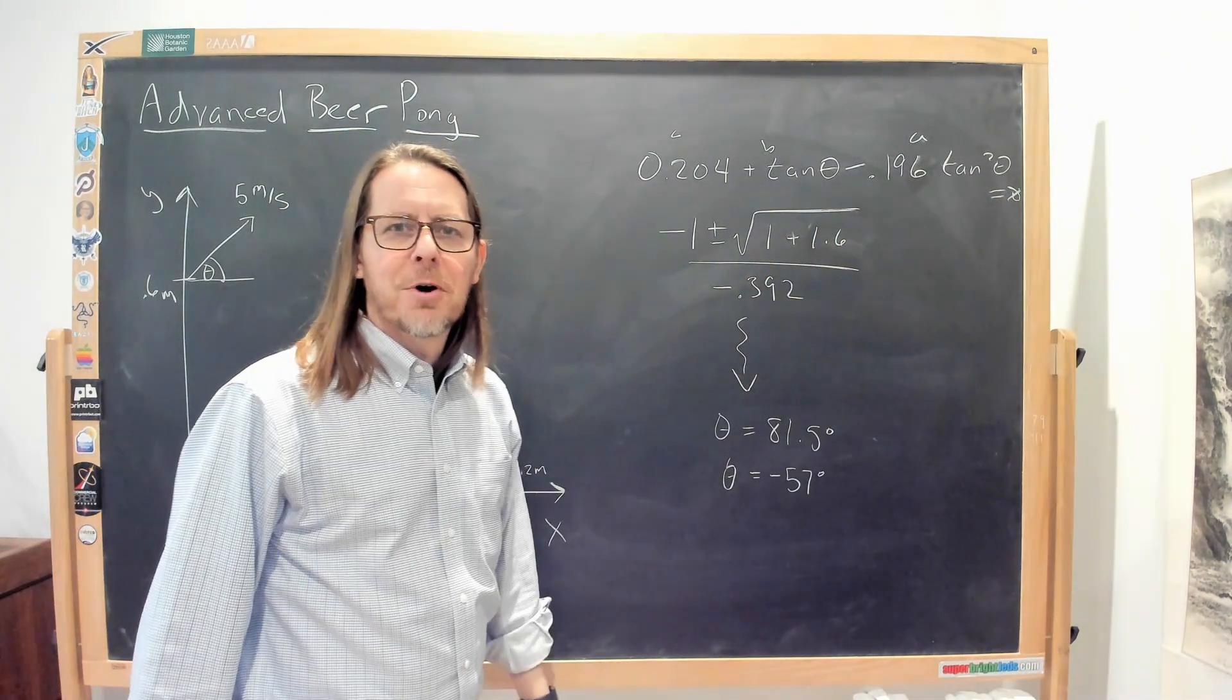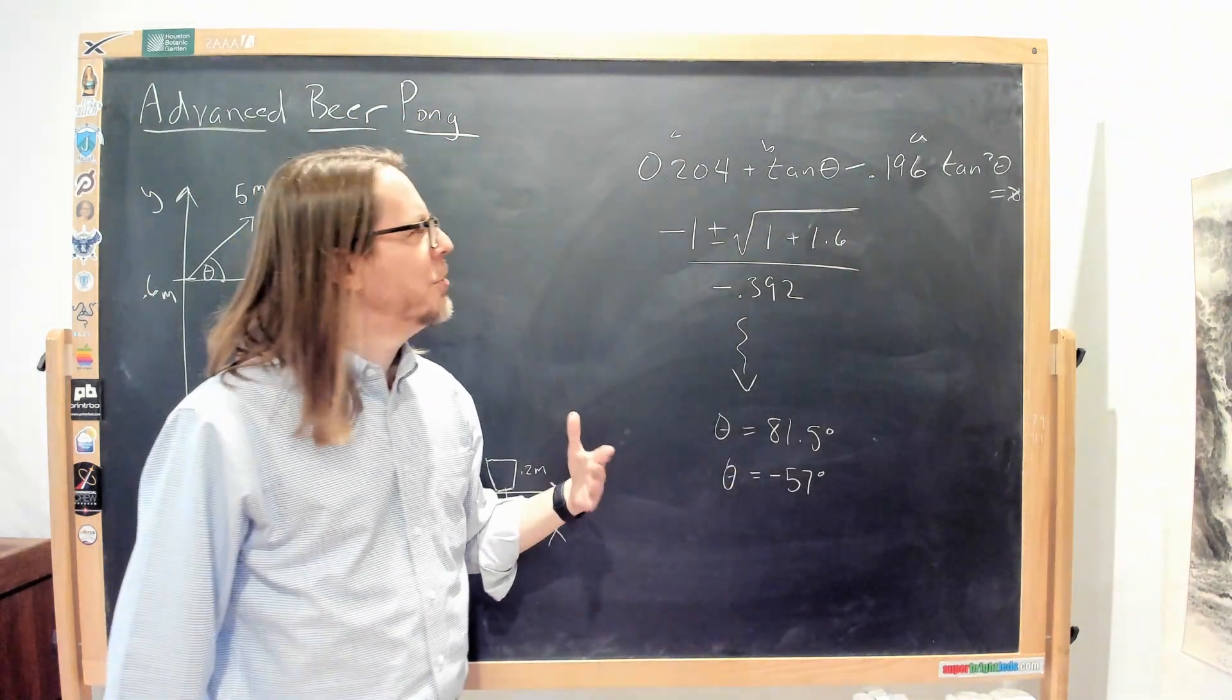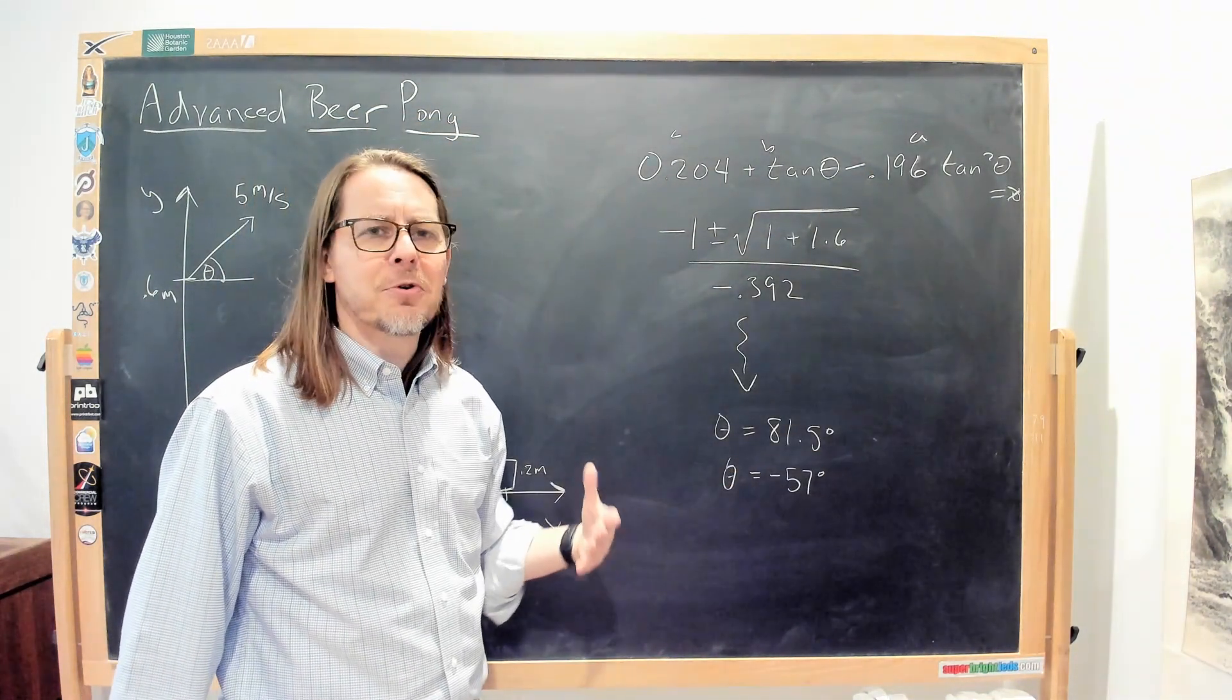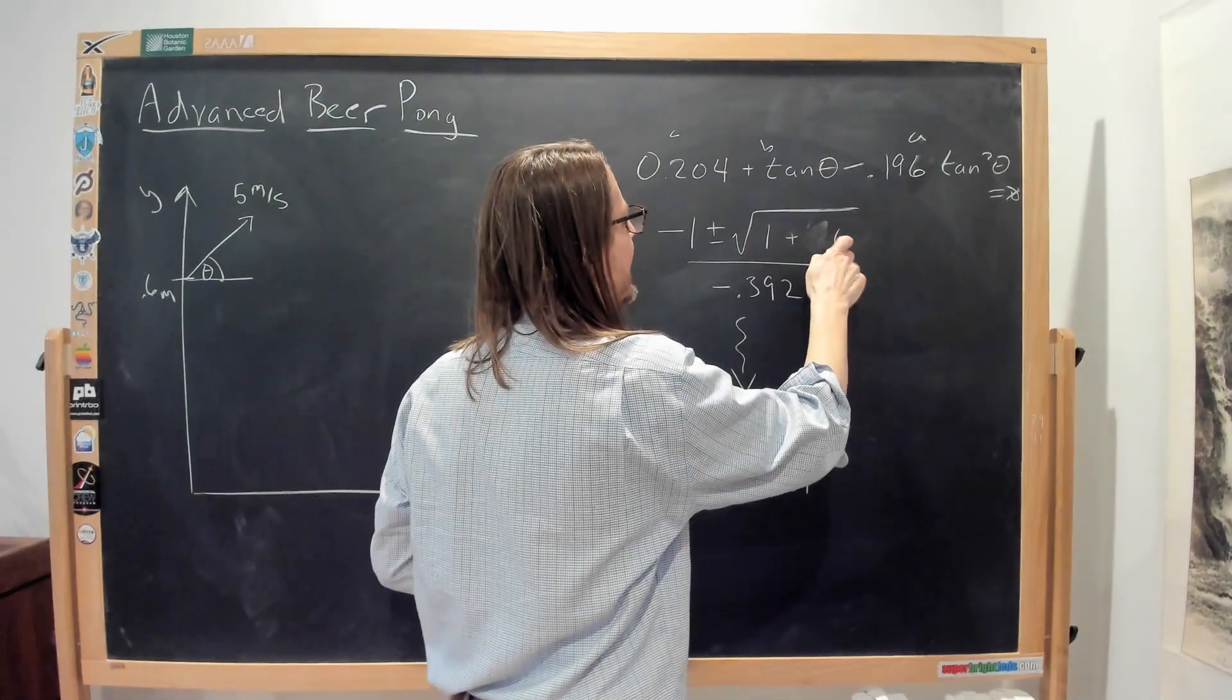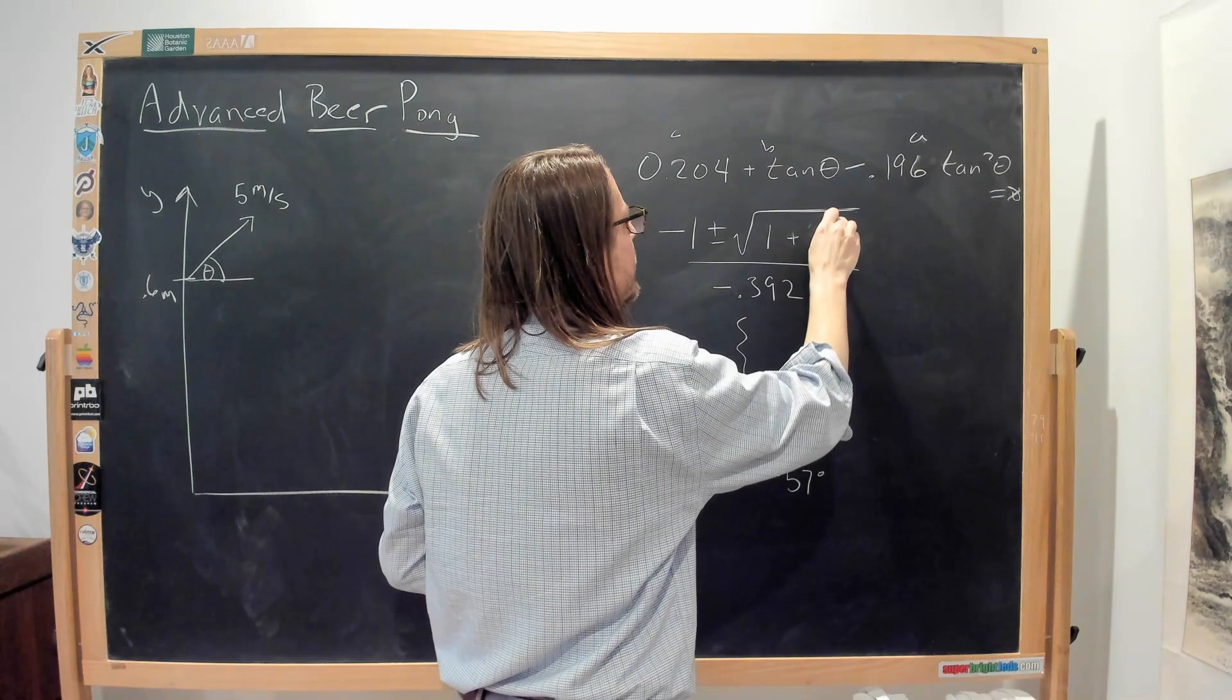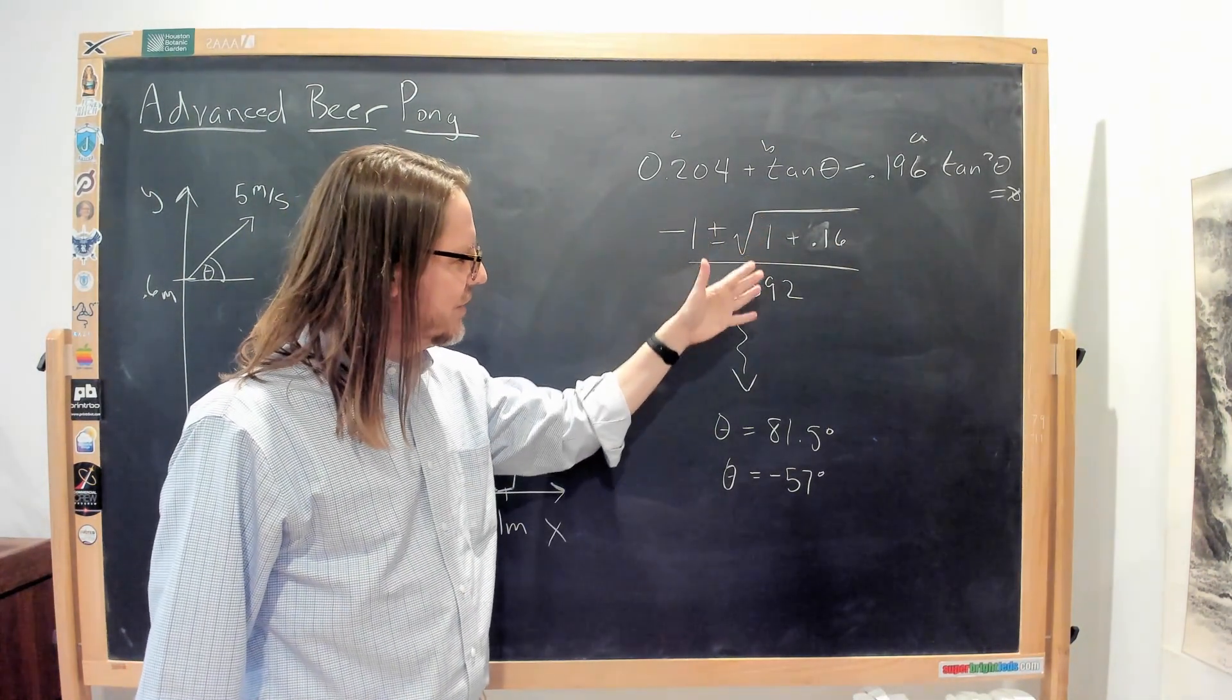So here's obviously where I went wrong, right? So 0.2 times negative 0.2 is about negative 0.04. 0.04 times 0.4 is 0.16. So it's plus 0.16, not 1.6. Whoops. That's really the only problem. That little numerical error, of course, that changes the answer.